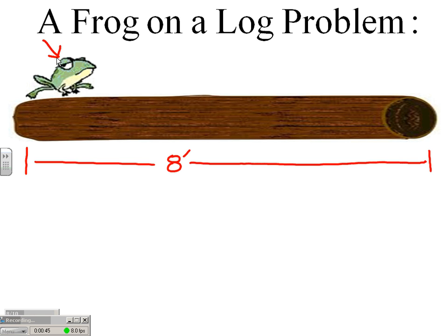We place the frog over here at the end of the log, and we start letting that frog jump. Let's say that frog makes a jump every couple of seconds, and we start recording his jumps.